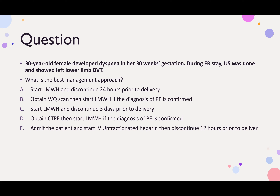We have a young pregnant female at 30 weeks with a lower limb DVT. Which anticoagulation will you use? Option A: start low molecular weight heparin and discontinue 24 hours prior to delivery. Option B: do a VQ scan, then start LMWH if PE is confirmed. Option C: start LMWH and discontinue three days prior to delivery. Option D: obtain CT-PE (CT angiogram), then start LMWH if PE is confirmed. Option E: admit the patient and start IV unfractionated heparin, then discontinue 12 hours prior to delivery.